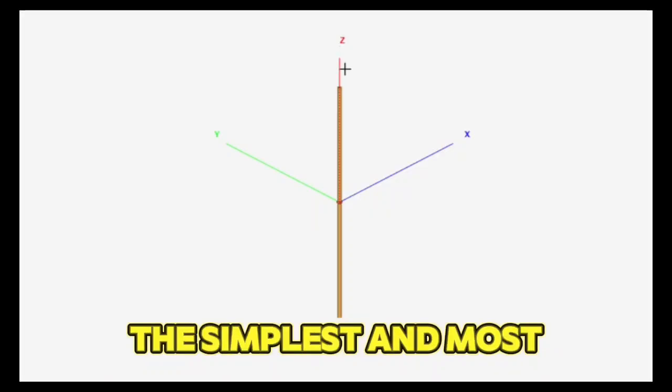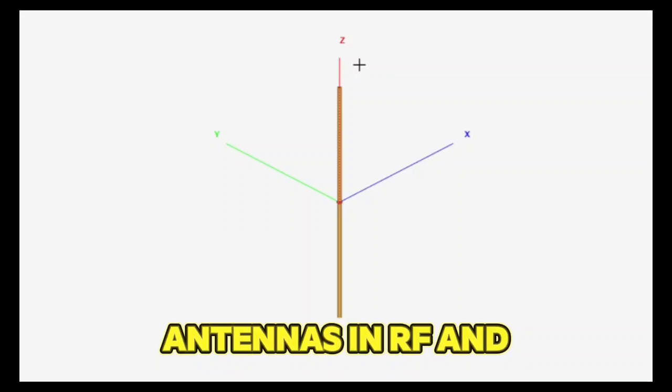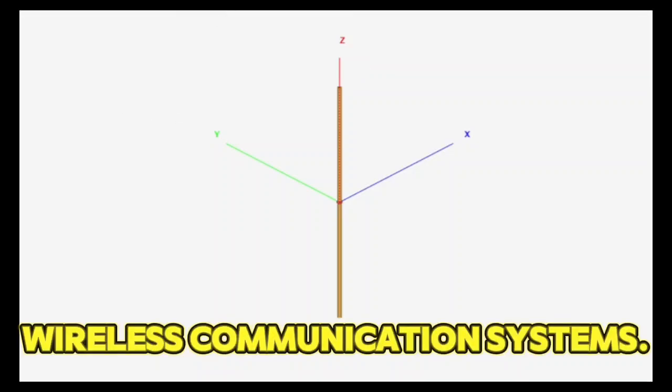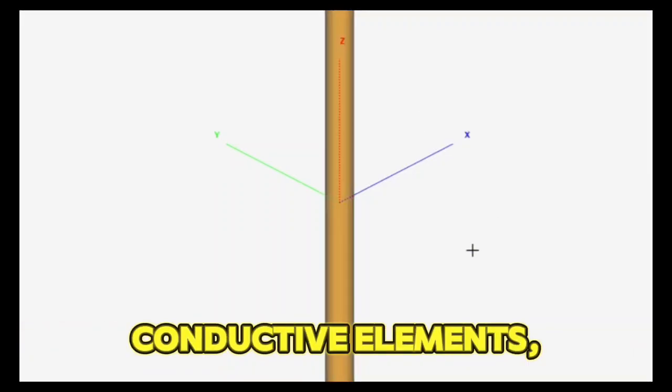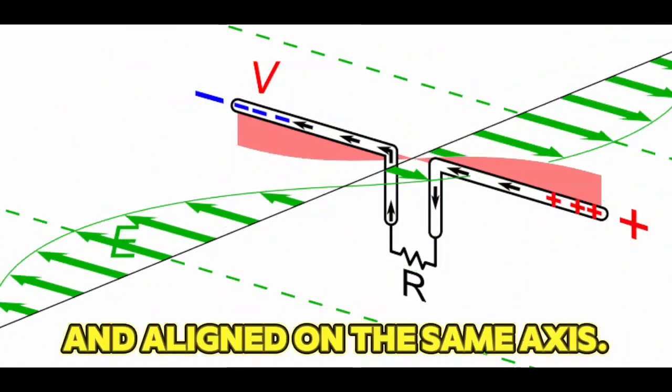A dipole antenna is one of the simplest and most widely used types of antennas in RF and wireless communication systems. It consists of two conductive elements, usually rods or wires, that are equal in length and aligned on the same axis.